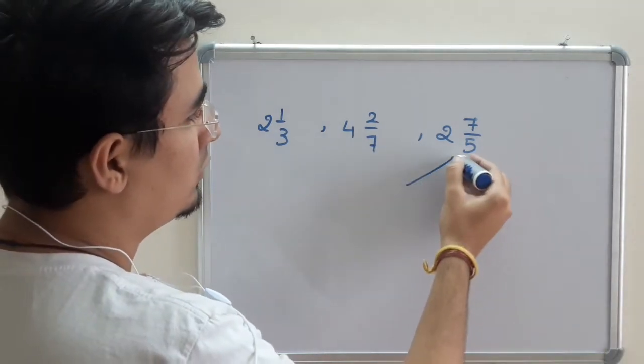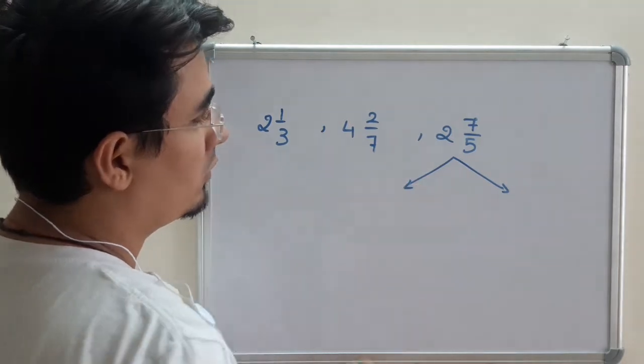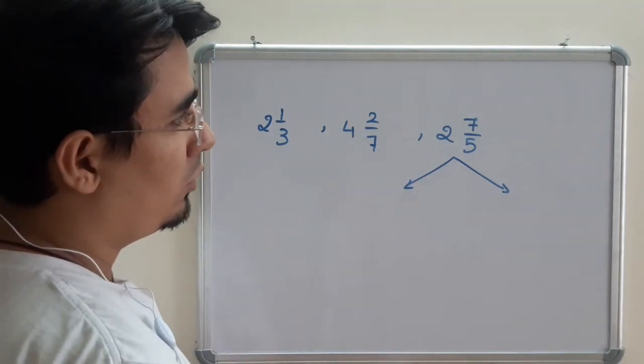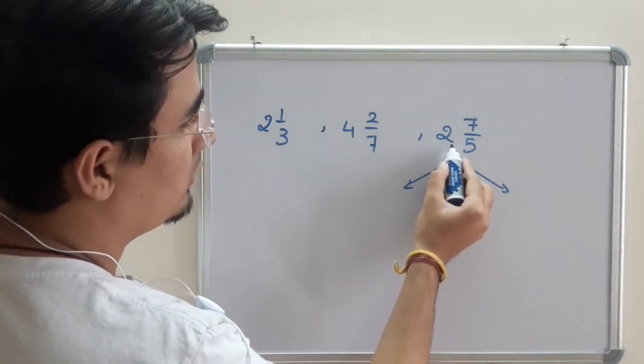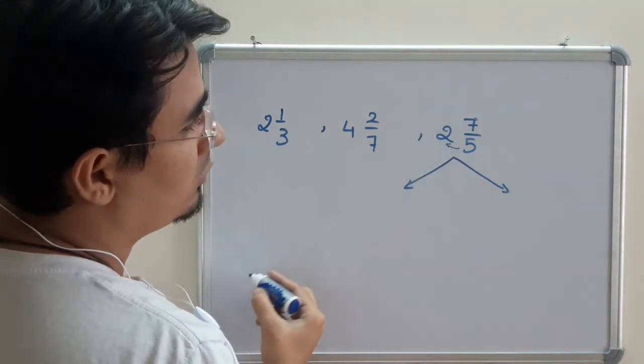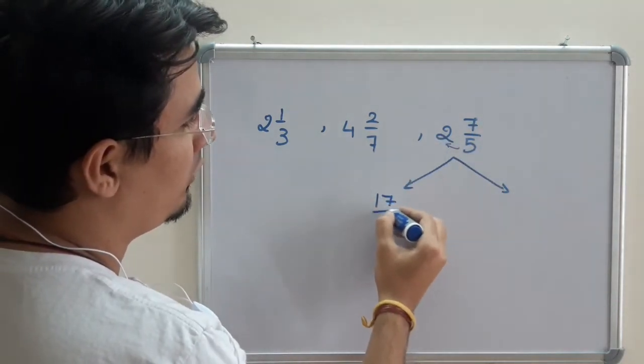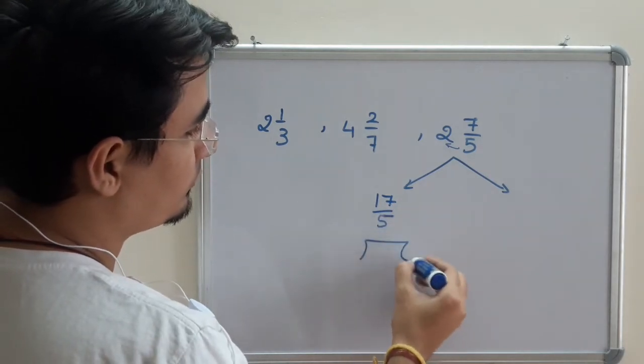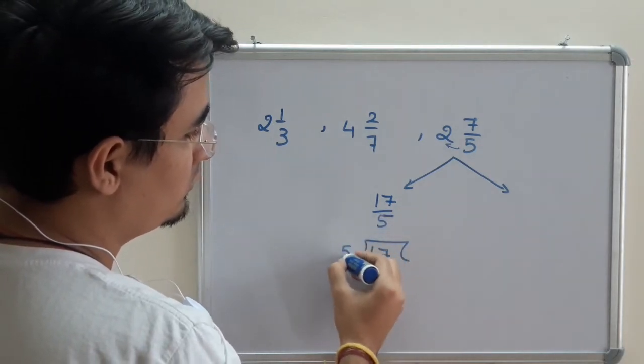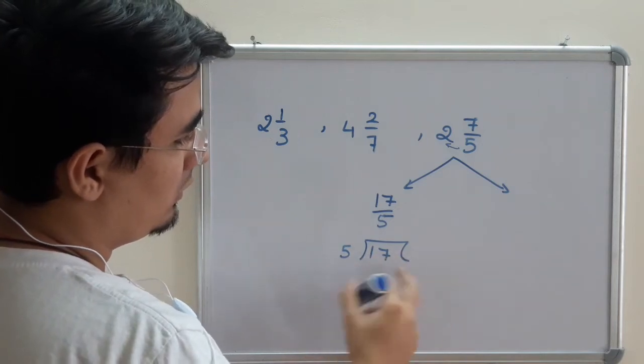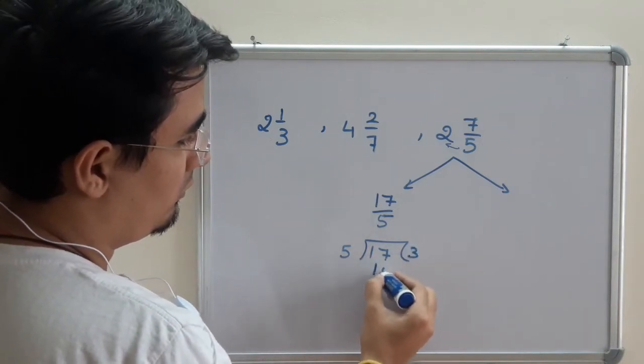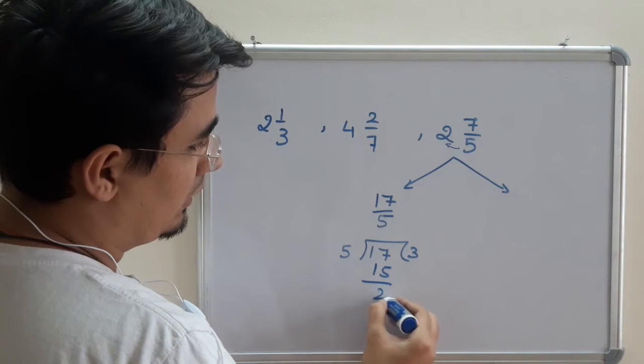One is the normal long way: multiply these two, it will be 10. 10 plus 7 is 17 upon 5. Then you divide them. So 17 divided by 5 is 3. It will be 15. I'll get a remainder of 2.